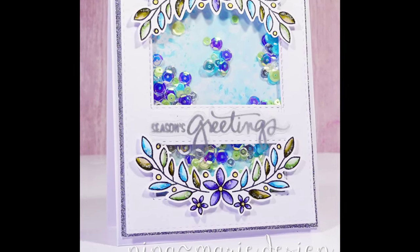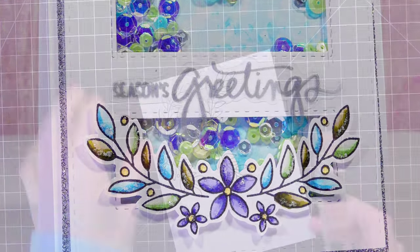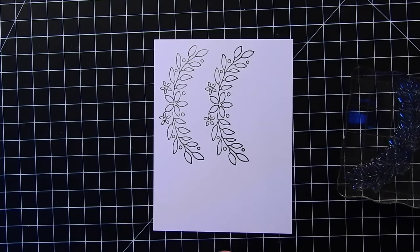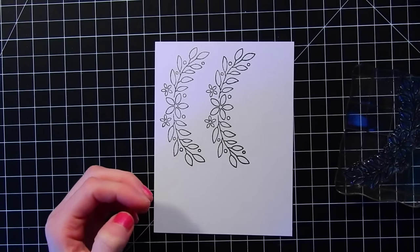In this card today, I have a few different textures incorporated into the design. I'm also going to be showing you how to color in these cute little flowers from the Simon Says For To Us stamp set.